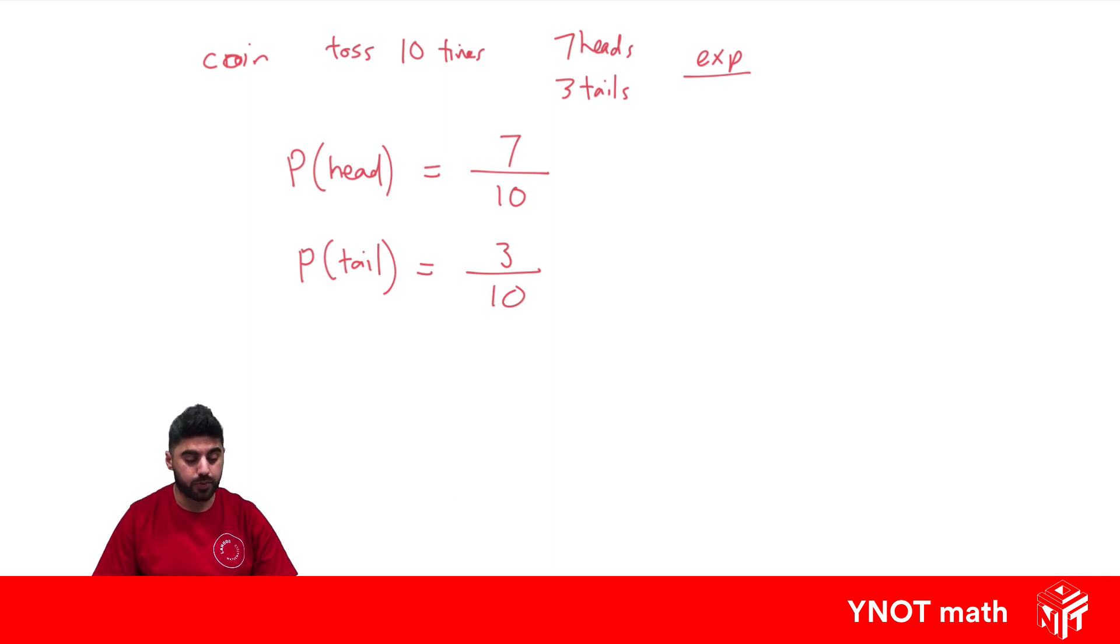We know the theoretical probability is actually a half for both, but based on that experiment, that's what we conclude our experimental probabilities to be.